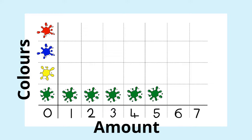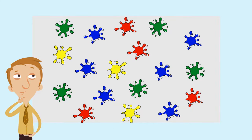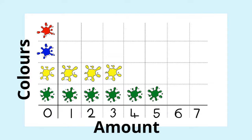Let's try the same thing again with the yellow splats. Count up how many yellows there are. That's right there's three of them. We go back to our pictogram and we put them in like this.